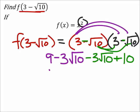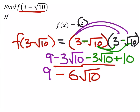So now what we end up with is 9. In the middle here, I've got minus 3√10 minus another 3√10, which gives me negative 6√10. Then I add 10.